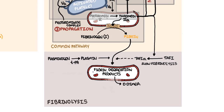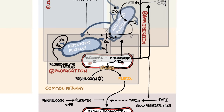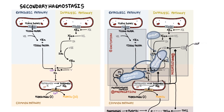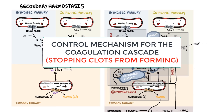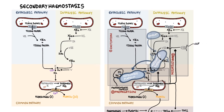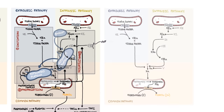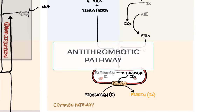Now that we know the classic model involving the intrinsic and extrinsic pathways, and the cell-based model with initiation, amplification, and propagation, it is important to learn about the control mechanisms and termination of coagulation. The coagulation cascade involves interaction of activated platelets and clotting factors. While propagation of thrombin and fibrin formation is necessary to stop bleeding, an uncontrolled cascade would lead to thrombus formation causing clots in veins and arteries and organ damage. The body therefore has antithrombotic pathways to stop and control clotting.